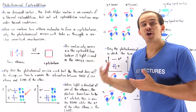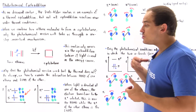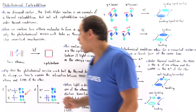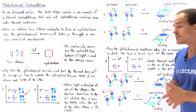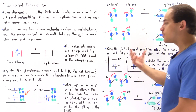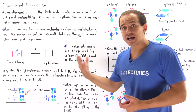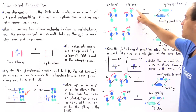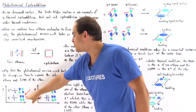Under thermal conditions, instead of using light as the energy source, we use heat. The electron is never bumped to pi star; under thermal conditions it remains in the pi orbital. So the HOMO changes for our thermal case — the HOMO is now pi and the LUMO remains pi star.